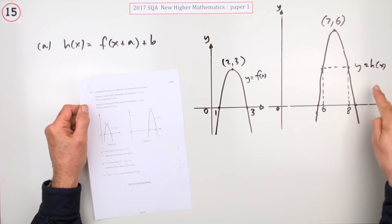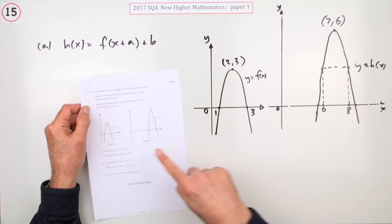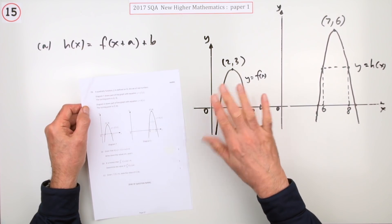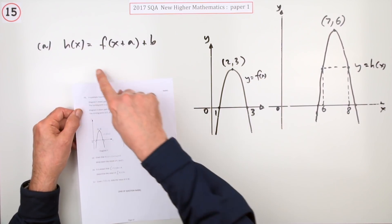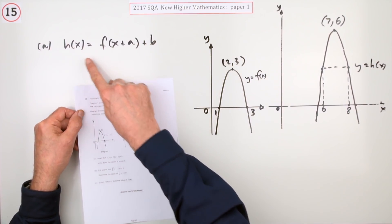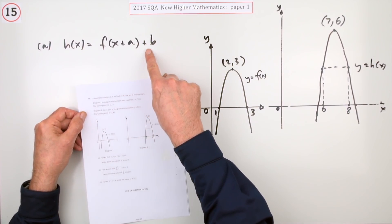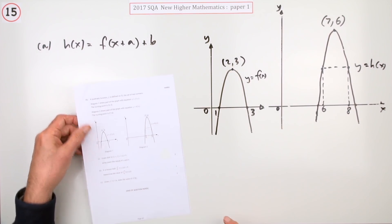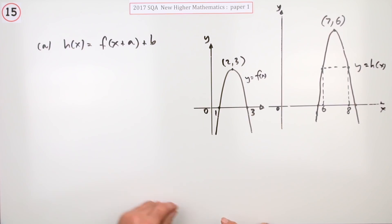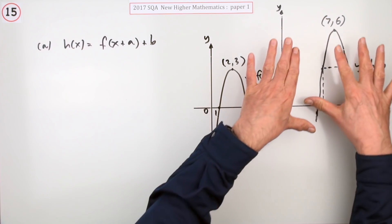A quadratic function h(x) which is simply, according to this, a transformation of this graph. And it's given here h(x) = f(x + a) and then overall plus b. Write down the values of a and b. So this is simply meant to be this one that's been shifted along and up.